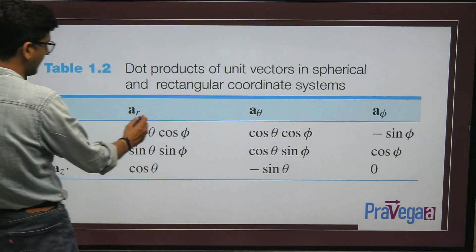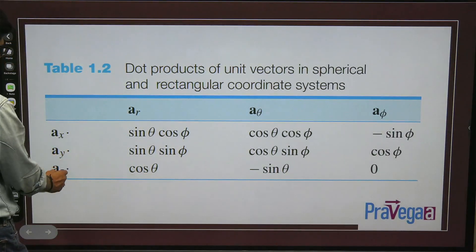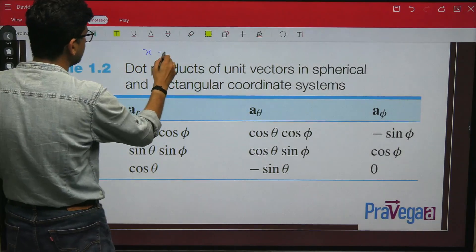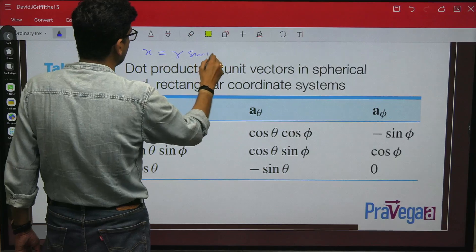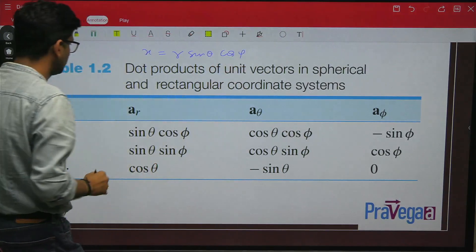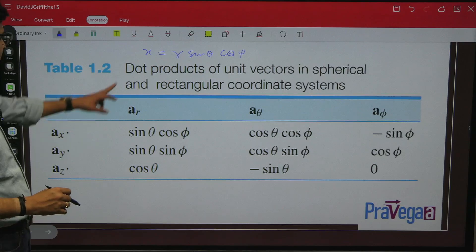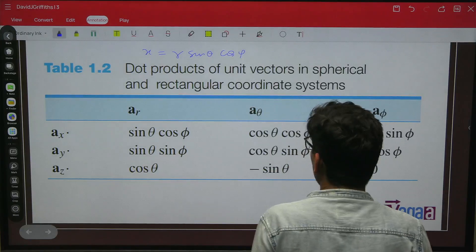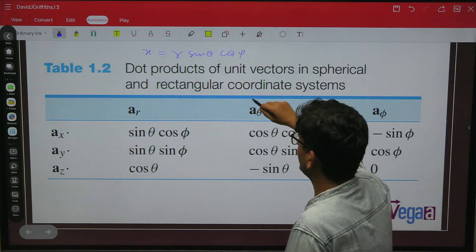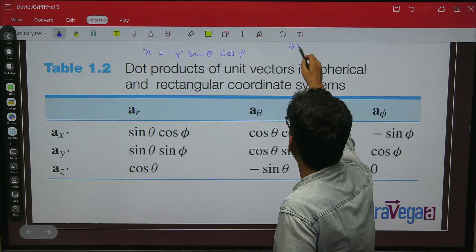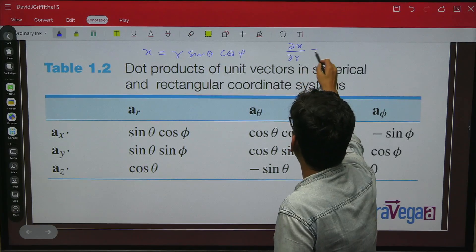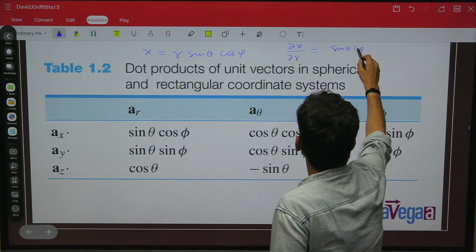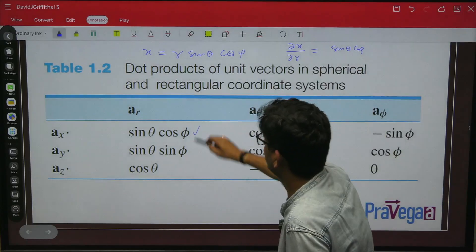So this is r cap, theta cap, phi cap. This is x cap, y cap, z cap. And because you have relations, for example, x is equal to r sin theta cos phi, so if I want to calculate the unit vector in respective directions, I can calculate this. For example, if I calculate it in r direction, I will take derivative del x by del r and dividing by its modulus. So when I take the derivative, it will become sin theta cos phi. So you can see here sin theta cos phi.